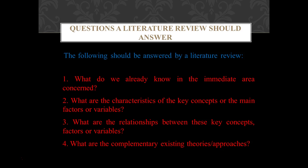There are some questions a literature review must answer. First, what do we already know in the immediate area concerned? Second, what are the characteristics of the key concepts or main factors or variables? Third, what are the relationships between these key concepts, factors, or variables — how are they related to each other? And fourth, what are the complementary existing theories or approaches for that particular topic? These questions must be answered by a literature review.